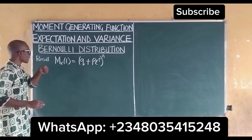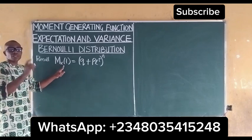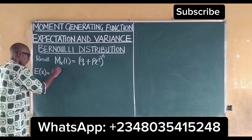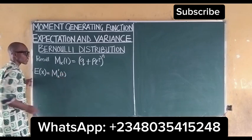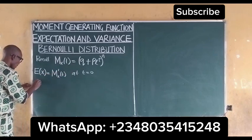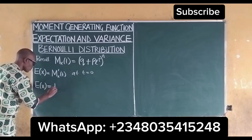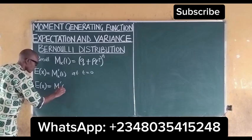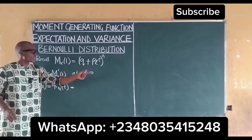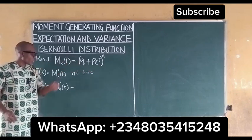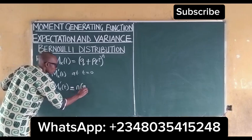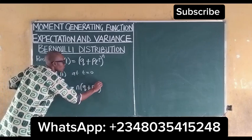Now we have to find the expectation of x, that means the first derivative. The expectation of x is equal to the first derivative of the moment generating function at t equal to zero. We use what is called the function-of-a-function method of differentiation to differentiate this at t equal to zero.